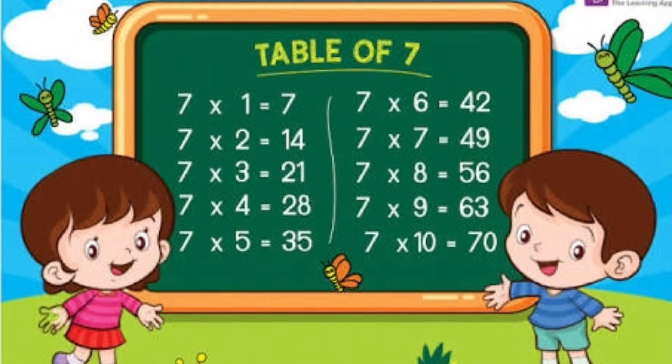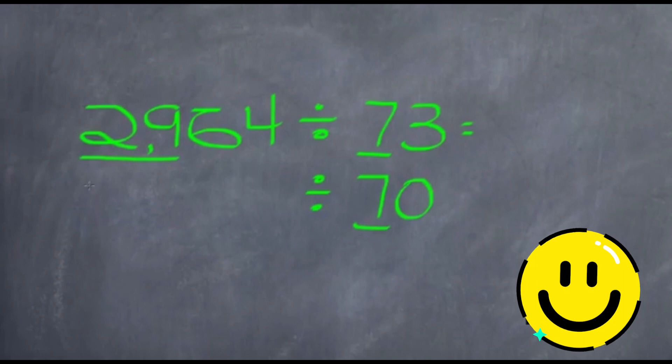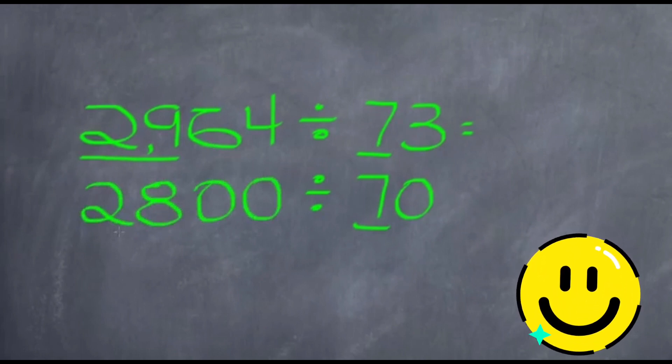When we read the table of 7, we see that 28 is near to 29. So we write 28 below 29 followed by two zeros.